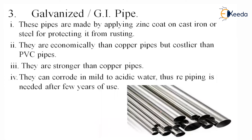Third is galvanized or GI pipe. These pipes are made by applying a zinc coat on cast iron or steel to protect it from rusting. This rusting problem from the earlier case is overcome by applying the zinc coating. They are more economical than copper pipes but costlier than PVC pipes. They are stronger than copper pipes but can corrode in mild to acidic water, so re-piping is needed after a few years of use. Houses built about 20 to 30 years ago are sure to have these GI pipes, and re-piping is an ongoing process for those houses.